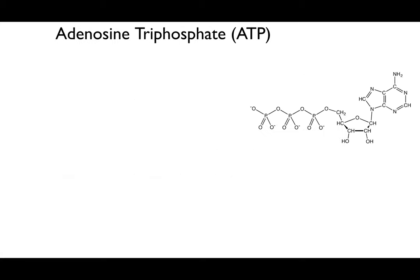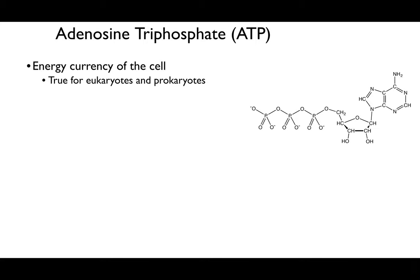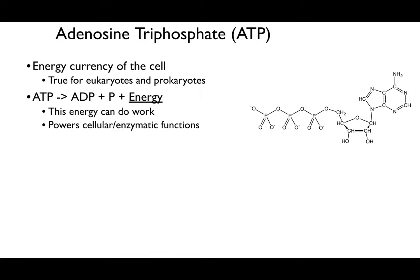It all starts with ATP—adenosine triphosphate—the energy currency of your cell. It is an adenine bound to a five-carbon sugar, which is then bound to three phosphate groups, and it is the energy currency for all eukaryotic and prokaryotic cells. You take ATP and dephosphorylate it—removing one phosphate bond, converting ATP to ADP—and by liberating one of those phosphate groups, you generate a lot of energy that powers cellular and enzymatic functions.